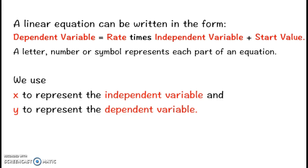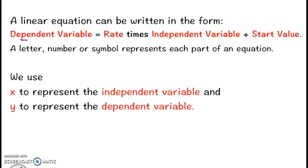A linear equation is just something that will end up being a straight line. It can be written in this form: dependent variable equals rate times independent variable plus start value. We use a letter, number, or symbol to represent each part of the equation.